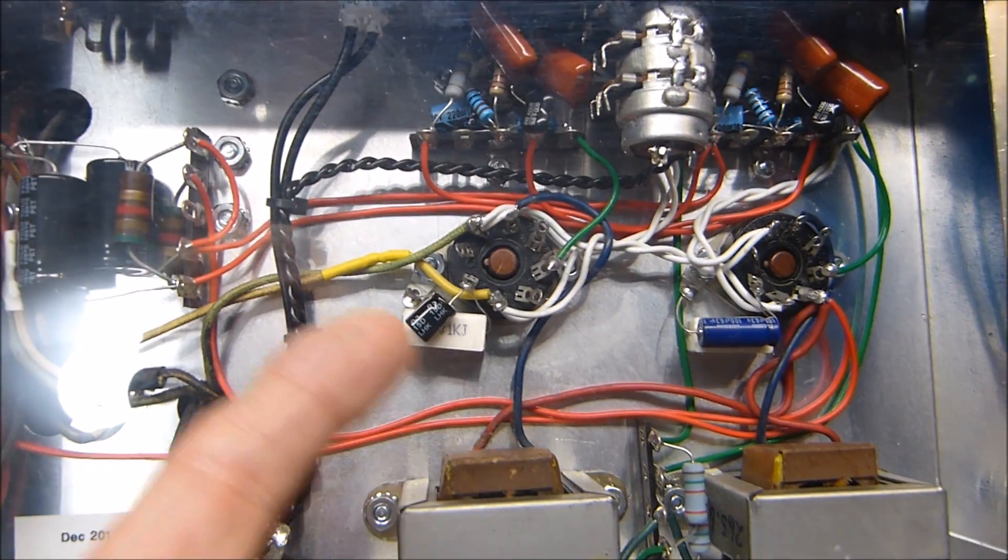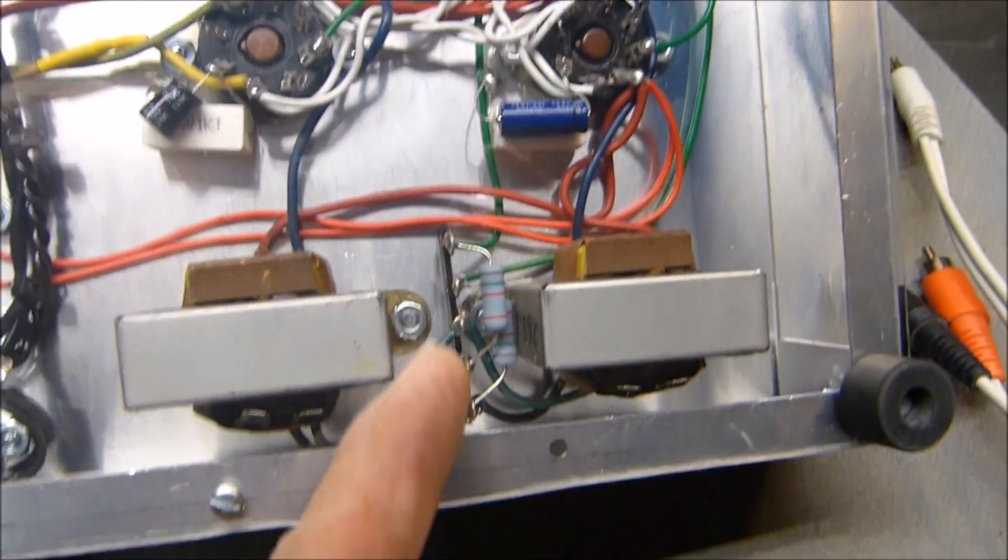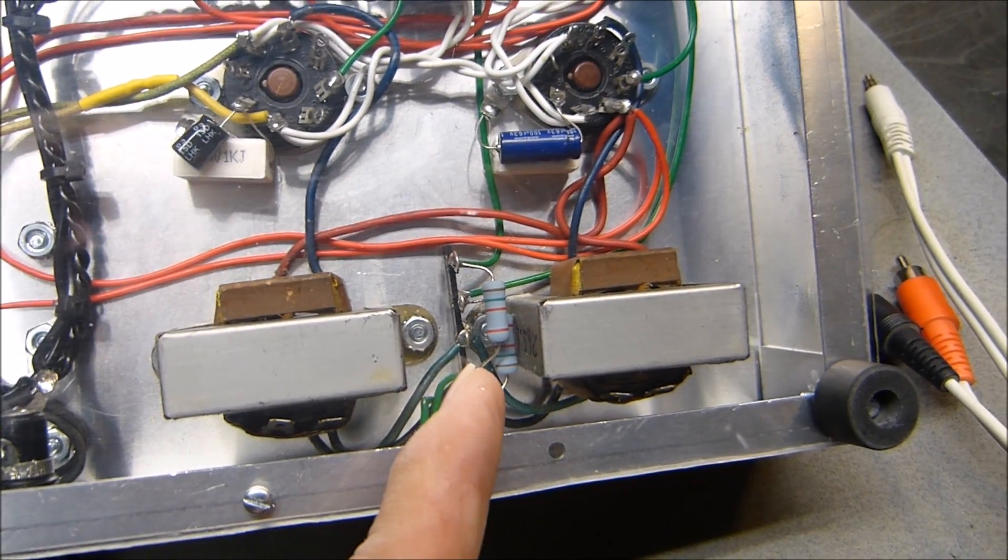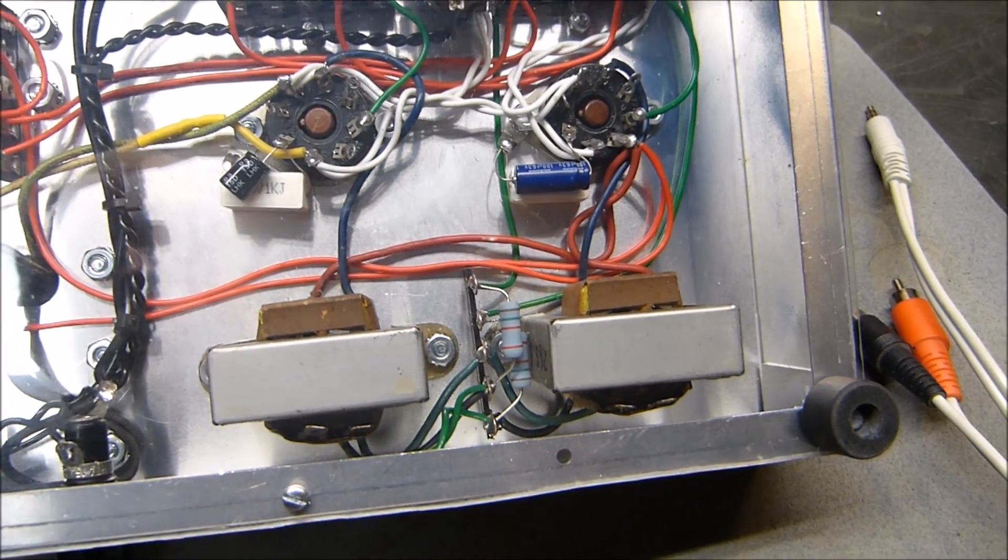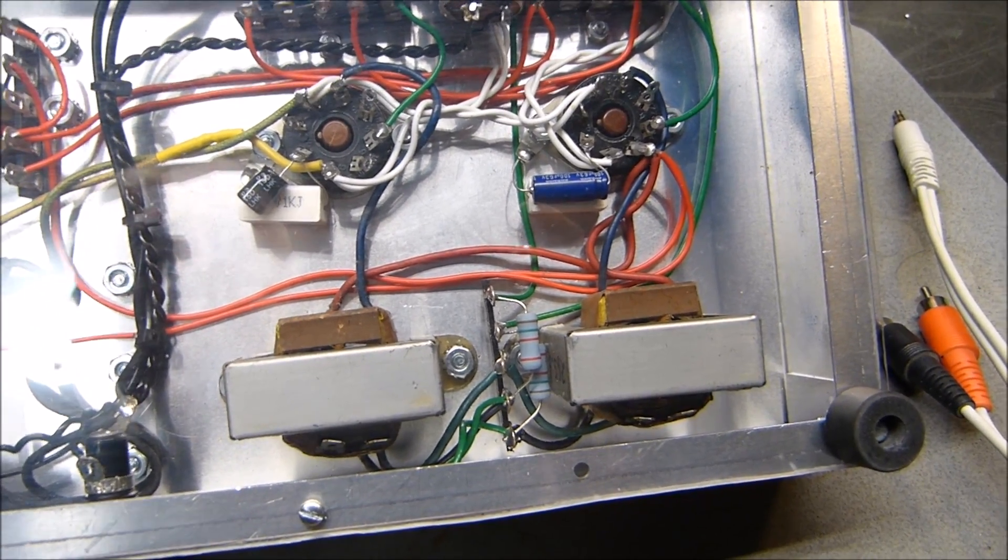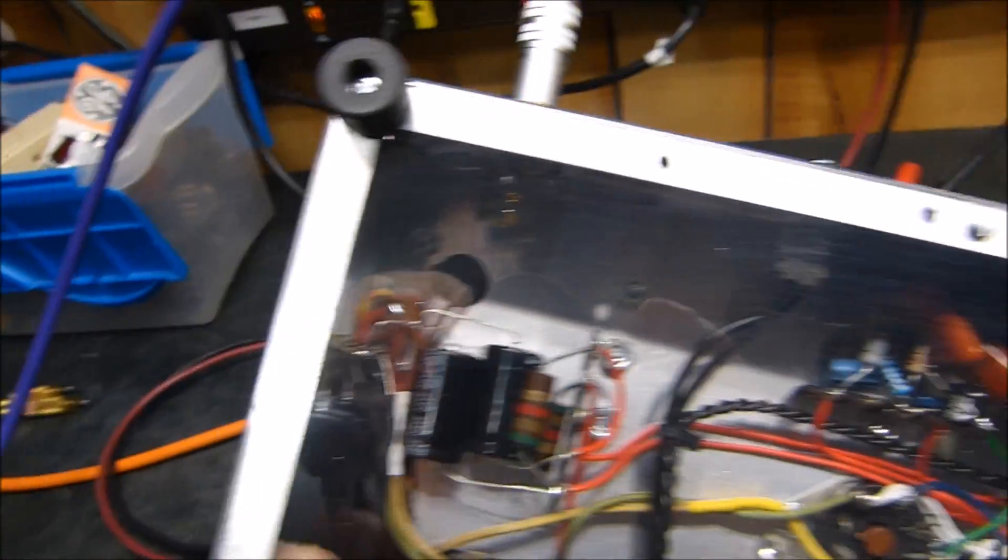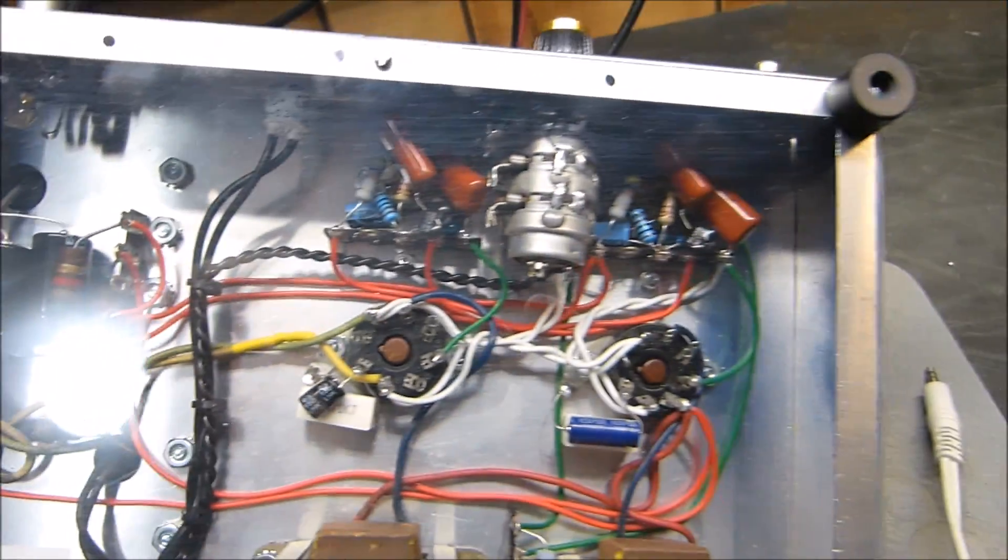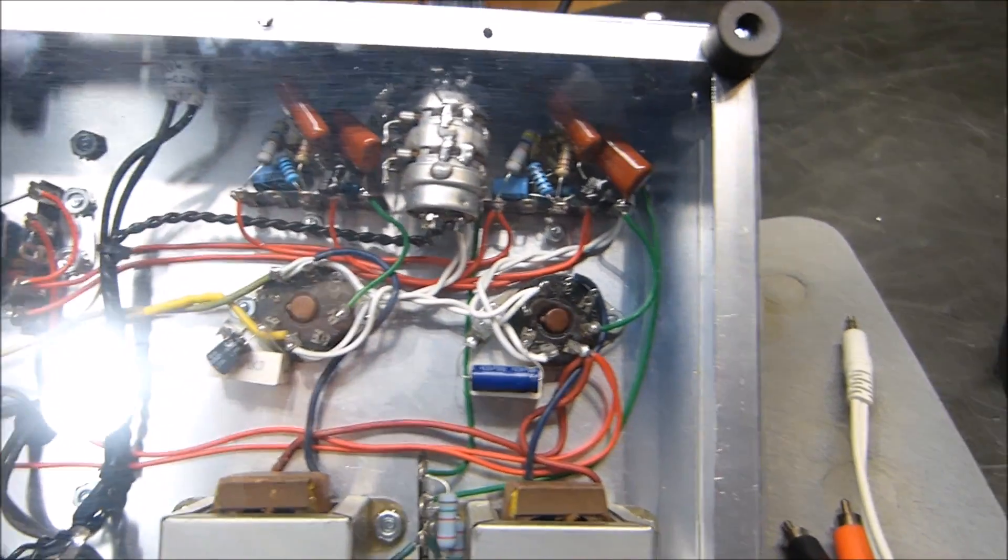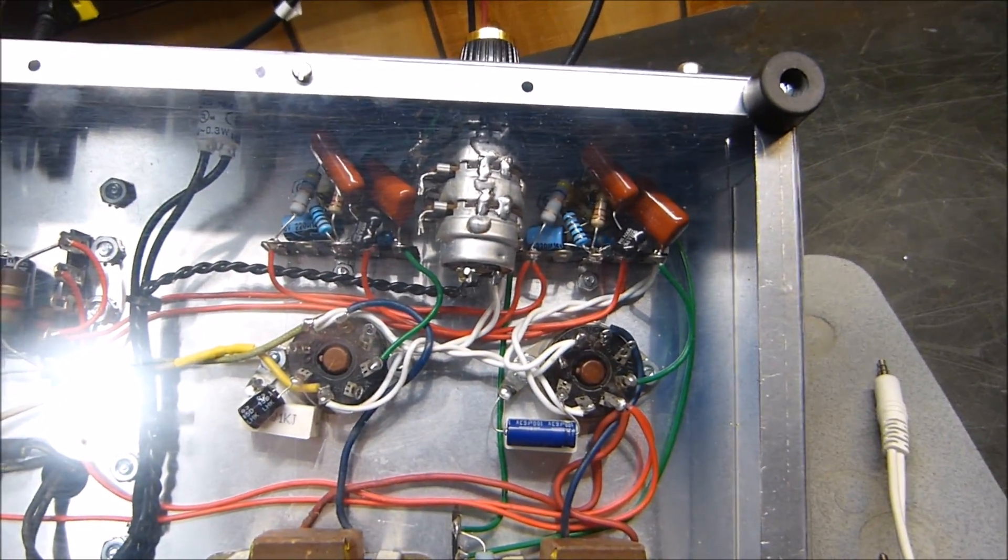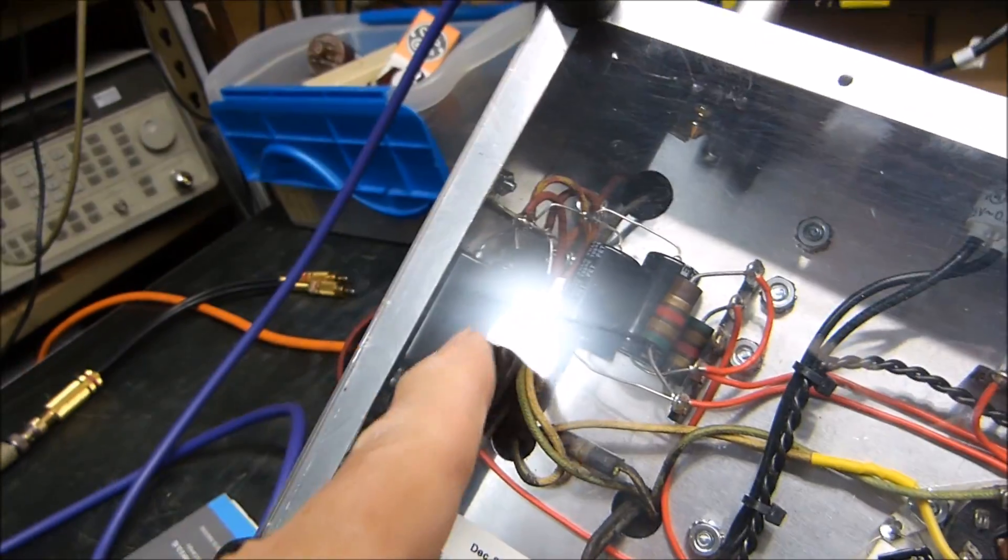I ground the cathode of the output tubes right at the tube socket to a little ground lug. Same thing over here. So you don't have to run a star or bus ground. I mean, don't think that's going to hurt anything, but it isn't necessary as long as you keep your power supply over in the corner, keep it away from the audio circuits, and ground everything at one point.